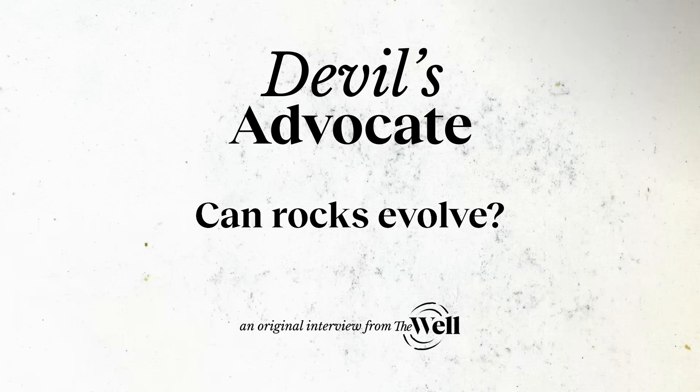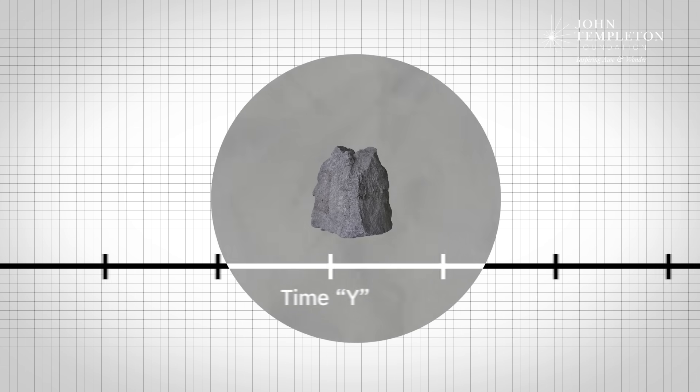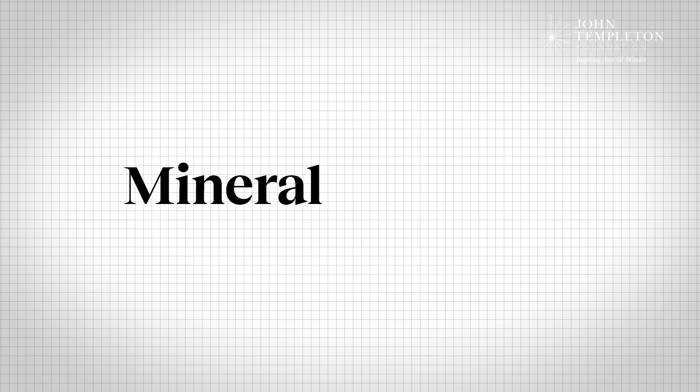A colleague asked me: was Mineral X around at time Y in Earth history? It's putting a time axis on mineralogy, and this led to the idea of mineral evolution — where you start with just a few dozen minerals that form planets in the earliest stage of our solar system.